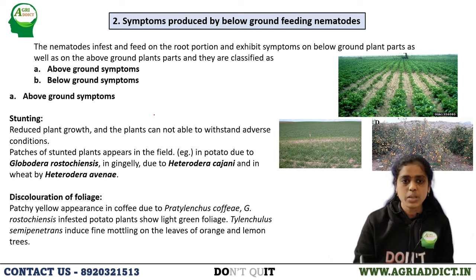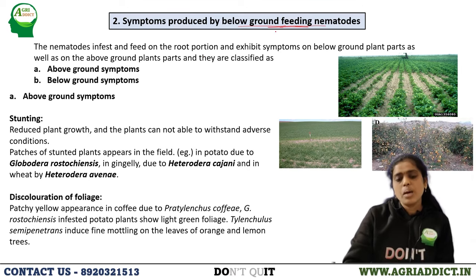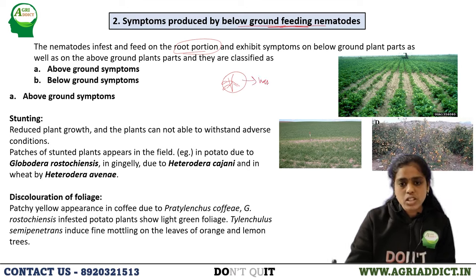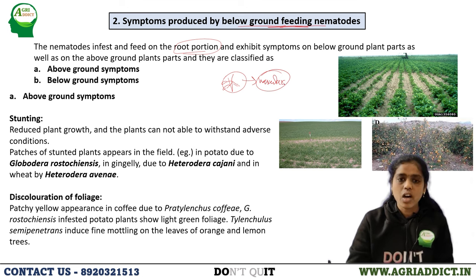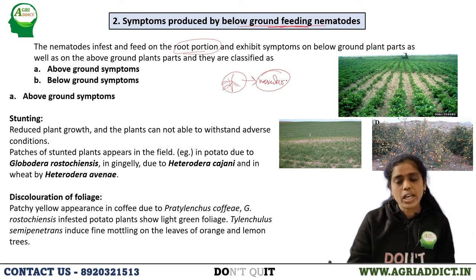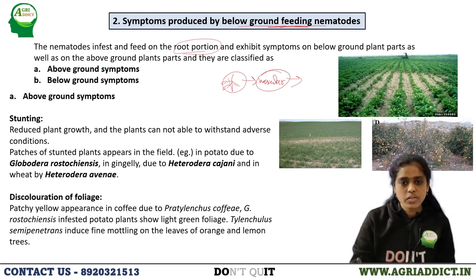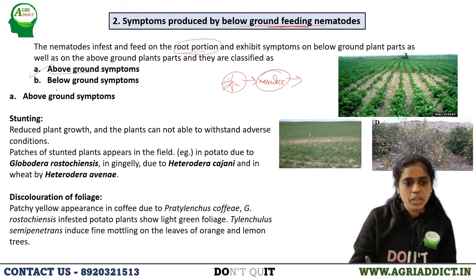Up to here we have seen symptoms caused by above-ground feeding nematodes. Now we will see symptoms caused by below-ground feeding nematodes. Below-ground feeding nematodes mainly feed on the root portion, exhibiting both above-ground and below-ground symptoms. If a nematode attacks the root portion, root growth is impaired and vascular tissue is affected, inhibiting translocation of water and nutrients to the shoot system.